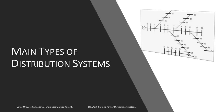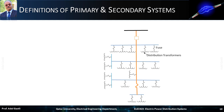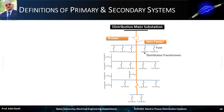Now let's move to the definition and description of the main types of distribution systems, which is the main subject of this chapter. This figure illustrates a typical schematic diagram of an electric power distribution system. Usually, from upstream to downstream, the starting point is the distribution main substation. Then we have a primary feeder, which is protected with a main circuit breaker.